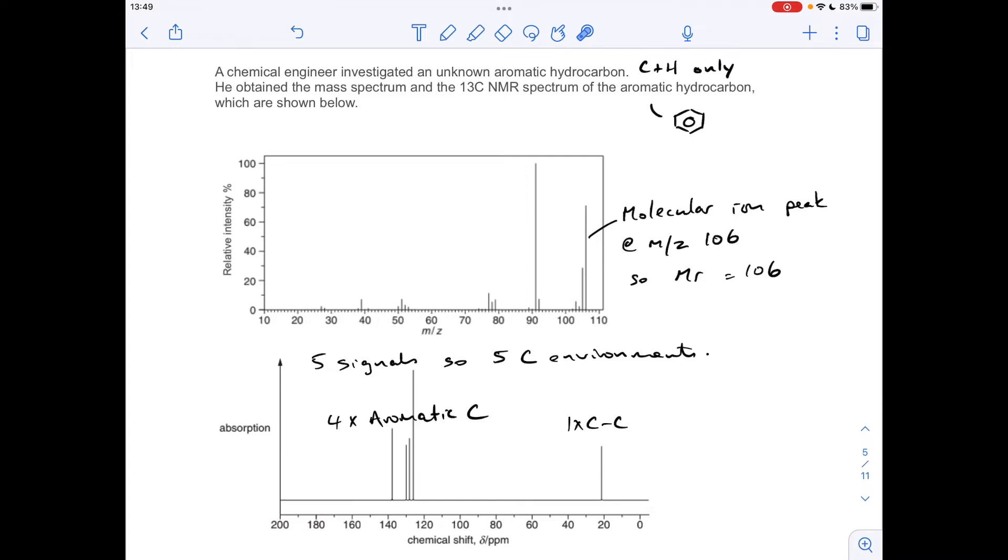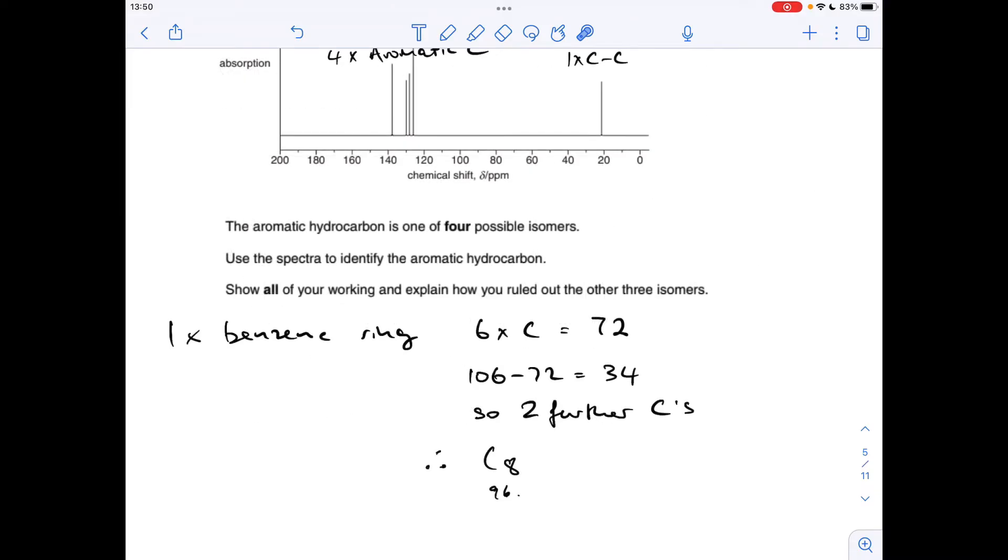So we can't have three more carbons because, obviously, that's 36. So there must be another two carbons. So there's a total of eight carbons in this hydrocarbon. So you can see I've written that up. So we've established there's eight carbons in the molecule. So they've got a mass of 96. The whole thing is 106. So we must have 10 hydrogens.